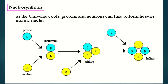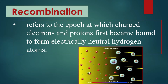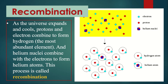Recombination refers to the epoch at which charged electrons and protons first became bound to form electrically neutral hydrogen atoms. As the universe expanded and cooled, protons and neutrons combined to form hydrogen — the most abundant element in our universe. Helium nuclei also combined with neutrons to form helium atoms. This process is called recombination.